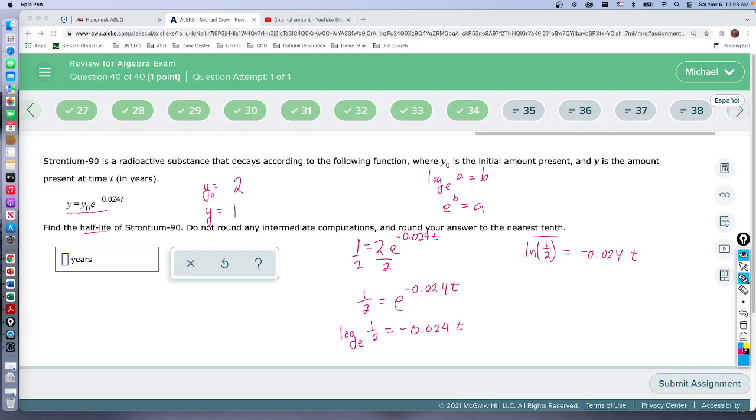So we divide by the number in front of the t and it will give us the time, right? Negative 0.024 both sides, negative 0.024. That's going to be what t is.